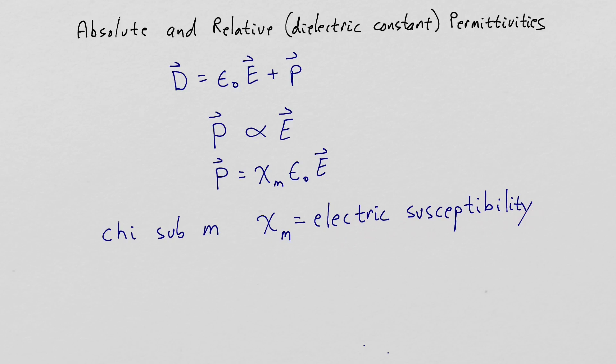So now let's substitute for the polarization field chi sub m epsilon sub zero times the electric field intensity. Doing that we have this expression, and we're going to factor out the epsilon sub zero and the electric field intensity.